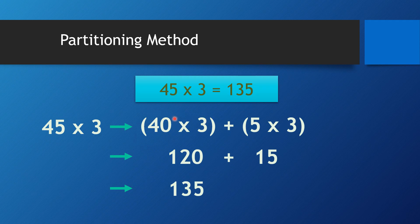Now, forty times three. I know forty is a double-digit number, but it's an easy way — that is the reason we are partitioning. Close the zero. What do you have? Four times three. What is four times three? Twelve. Write twelve first, and then you closed one zero, so write zero at the back. Four times three is twelve, you write one zero here, so it makes one hundred and twenty. Forty times three equals one hundred and twenty.